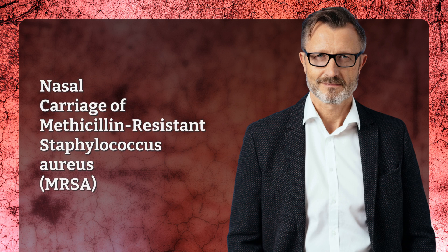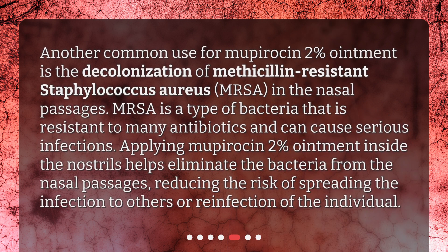Nasal Carriage of Methicillin-Resistant Staphylococcus aureus, MRSA. Another common use for Mupirocin 2% ointment is the decolonization of MRSA in the nasal passages. MRSA is a type of bacteria that is resistant to many antibiotics and can cause serious infections. Applying Mupirocin 2% ointment inside the nostrils helps eliminate the bacteria from the nasal passages, reducing the risk of spreading the infection to others or reinfection of the individual.